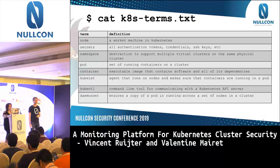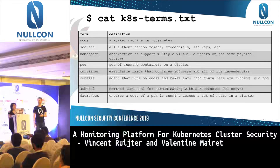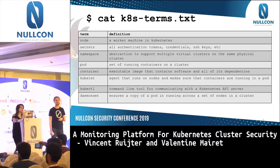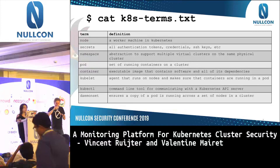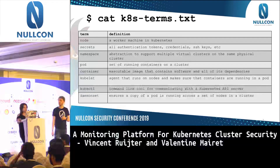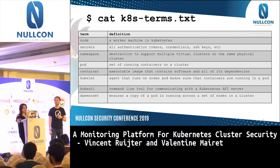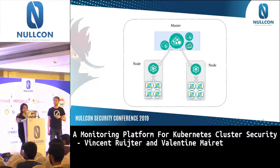For people with no experience in Kubernetes, we've prepared a nomenclature table. A node is a worker machine in Kubernetes. Secrets are files or a set of files containing authentication tokens, credentials, SSH keys — everything you need to keep secret. Namespaces are Kubernetes abstractions to support multiple virtual clusters. A pod is a set of running containers in the cluster. A container is a basically executable image that contains software and all its dependencies. The kubelet is an agent that runs on nodes and makes sure containers are running in a pod. kubectl is the command-line tool for communicating with the Kubernetes API server. A DaemonSet ensures a copy of a pod is running across a set of nodes in the cluster.